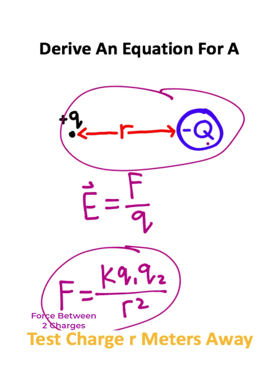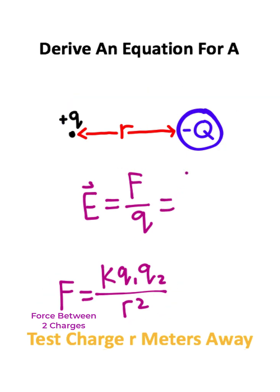If we apply this equation to the situation we have up here, we can see that this whole thing is equal to Coulomb's constant times charge 1, which is the test charge, times charge 2, which is the big charge, divided by the distance squared, which is just r.